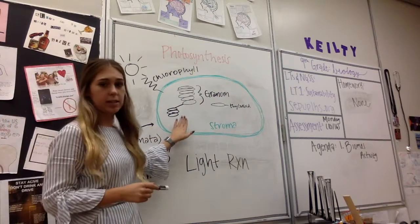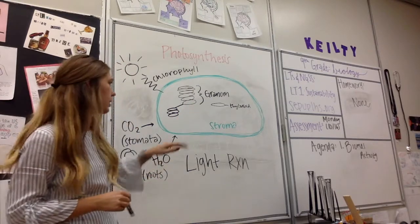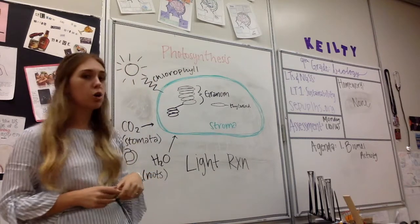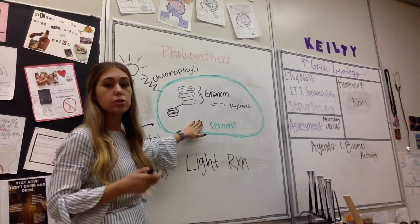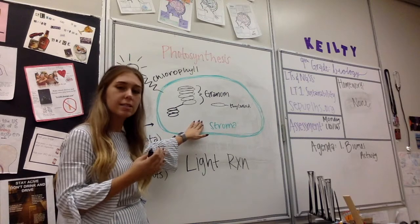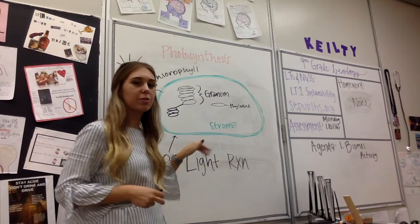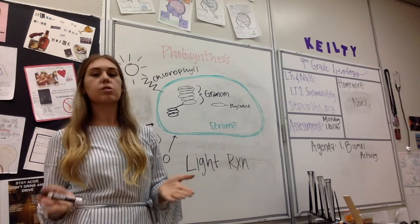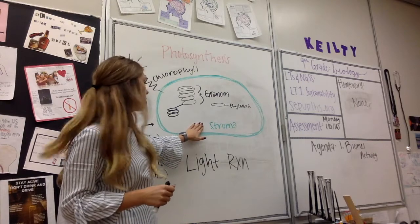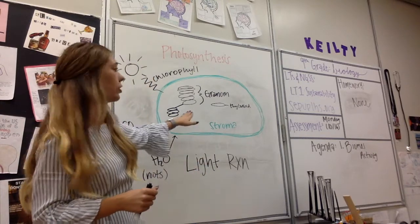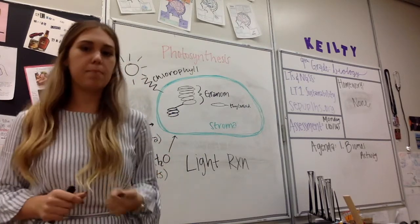Our chloroplast has several different parts. The stack of thylakoids is known as the granum. The extra space in here is our stroma — not to be confused with stoma. The stroma is the extra space where our dark reaction, or light-independent reaction, or Calvin cycle is occurring. Biology has a ton of different names for pretty much the same thing. The light reaction is actually occurring in the thylakoid, which is the individual discs that make up the granum.